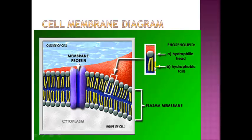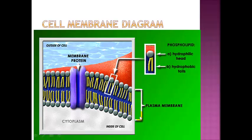The phospholipid also has a hydrophobic tail, which means it does not like water, so it points inside away from the water. This right here is actually a protein channel — we'll talk about that a little bit later. It allows things that are too big to flow straight through the phospholipid bilayer, so they have to go through the channel to get into the cell.